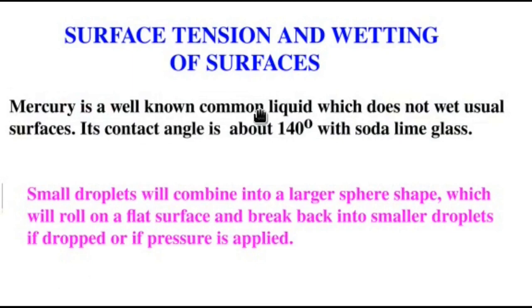Mercury is a well known common liquid which does not wet usual surfaces. Its contact angle is about 140 degrees with for example soda lime glass. Now, small droplets of mercury will combine into a larger sphere shape which will roll on a flat surface. For example, if a drop of mercury is kept on the floor and then we just gently push it, it will roll and move on the surface. Now, if it is dropped from a particular height then it will break into smaller spherical droplets or maybe if the drop is subjected to pressure.